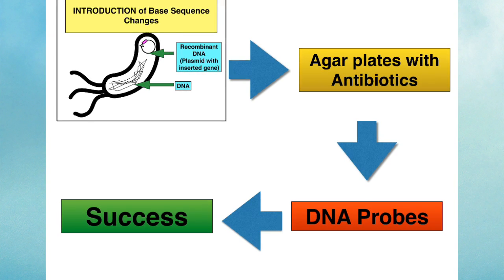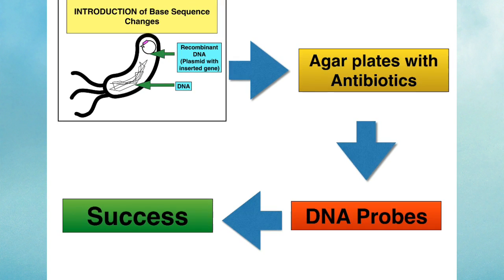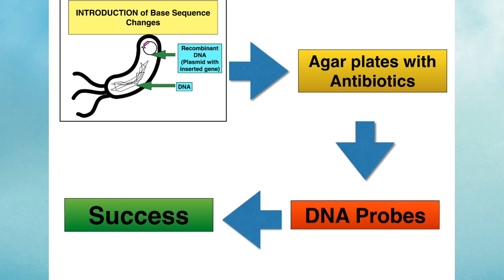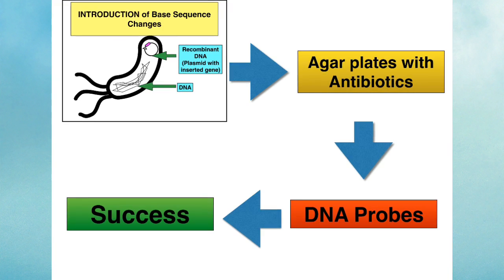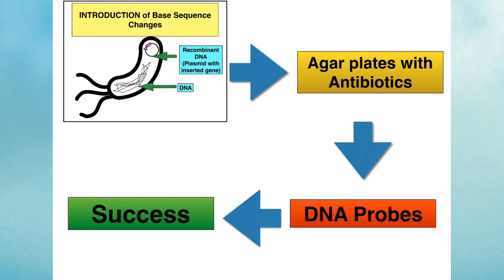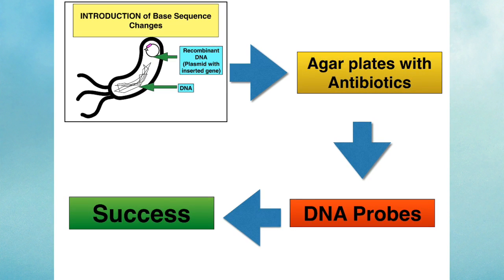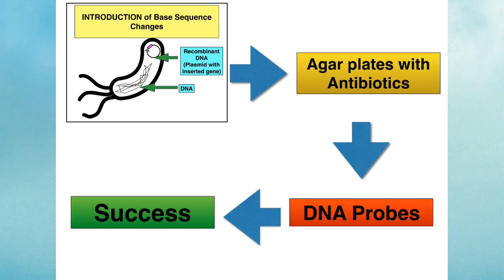The plasmids that are chosen as vectors in genetic engineering are usually chosen because they contain a gene for antibiotic resistance. So any bacterium that is growing on a plate that contains an antibiotic and survives must contain that plasmid. But does it contain the gene of choice?